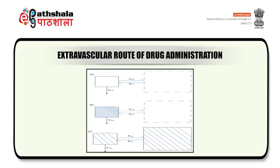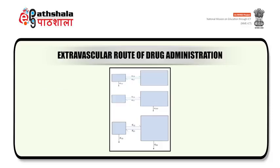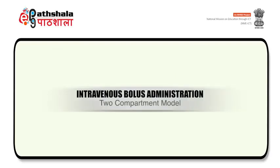The figure shows the two-compartment model: part A depicts immediately after drug administration; part B shows after attainment of distribution equilibrium; part C shows the micro-constant transfer K12 and K21 involved in transfer of drug from central to peripheral and vice versa, while K10 represents the elimination rate constant. There are three types of two-compartment model based on site of elimination. The most common has drug elimination from the central compartment. In the second type, elimination occurs from the peripheral compartment with rate constant K20. In the third type, both compartments are involved in elimination with rate constants K10 and K20 respectively.